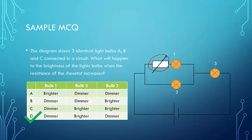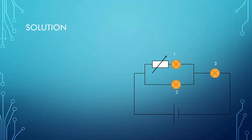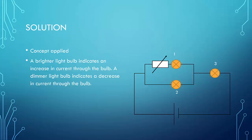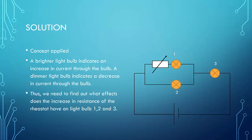So how do we do this? The concept applied is that a brighter light bulb indicates an increase in current through the bulb, and a dimmer light bulb indicates a decrease in current through the bulb. So we need to find out what effect the increase in resistance of the rheostat would have on the current through light bulbs 1, 2, and 3.